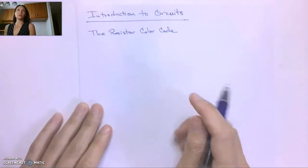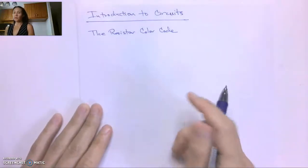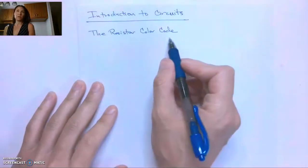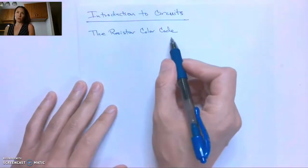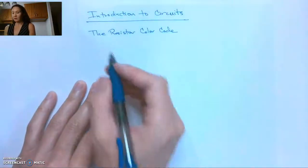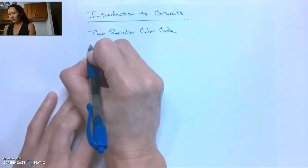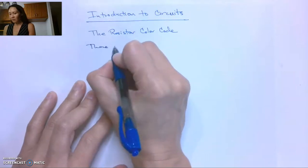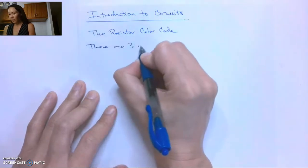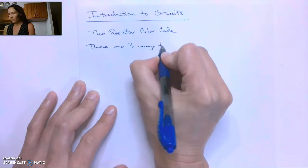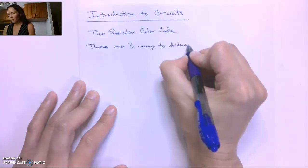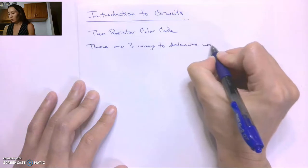Let's talk about how to determine the resistance of a resistor. Specifically, the resistor color code is what we're going to talk about first. To give you an introduction, there are three ways to determine the resistance of a resistor.